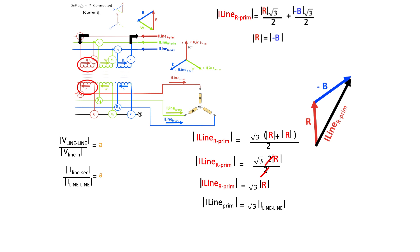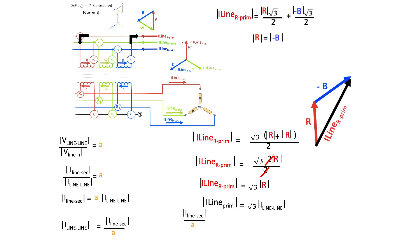So we have these two fractions that define the turns ratio of the transformer. We can rewrite the second one such that the magnitude of the current flowing in the winding of the primary side transformer is equal to the magnitude of the secondary line current all over the turns ratio. This now allows us to make a substitution in the previous equation, and we can define the primary line current in terms of the secondary line current: the primary line current is equal to root 3 times the secondary line current all over the turns ratio of the transformer.